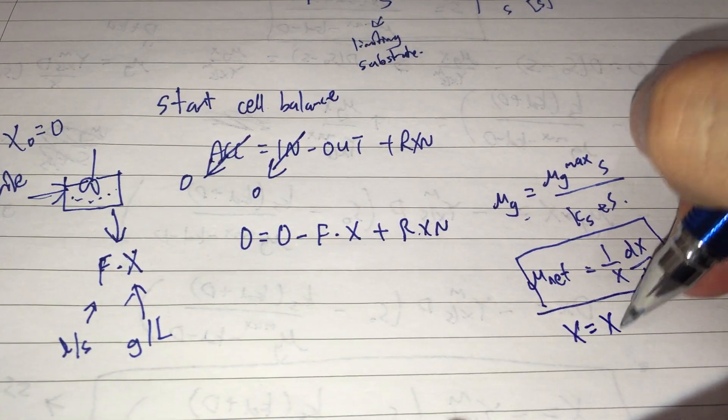Zero equals 0 minus F into X plus this reaction term. What is this reaction term? We have seen before we have this Monod kinetics. Mu G equals mu G max into S over KS plus S. How are we going to put this in here? We have to use this equation. Mu net equals 1 over X dx dt. This is a standard exponential growth equation.